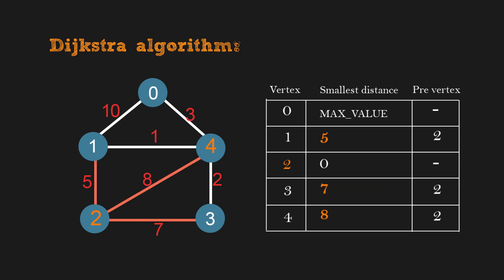In the first step, we update all values if there is an edge between 2 and the vertex. Now, we select the smallest distance among them, which is 5. The vertex is 1.